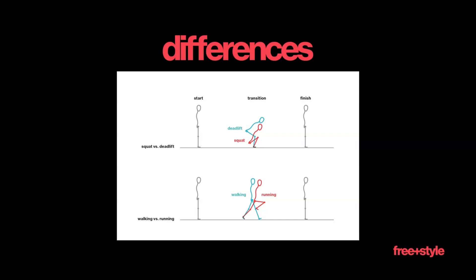Another example of transition position differences is walking versus running. When walking, one foot is always in contact with the ground. When running, there is a moment where both feet leave the ground. So the transition position in walking always has one foot on the ground, while the transition position in running has both feet off the ground — subtle yet very important mechanical differences.